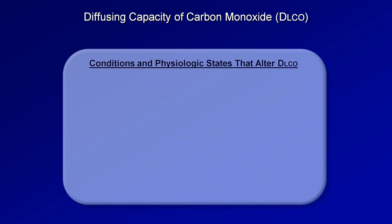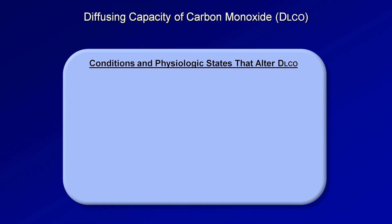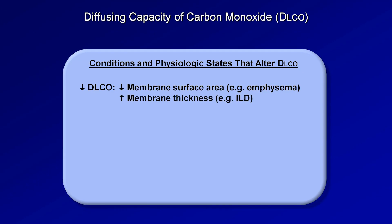There are many pathologic conditions and physiologic states that can alter the DLCO. Those that decrease it include anything that decreases surface area, such as emphysema, or anything that increases membrane thickness, such as interstitial lung disease. It also includes pulmonary hypertension of any cause, and anemia, since a decreased carrying capacity of carbon monoxide will necessarily result in a smaller partial pressure gradient driving the diffusion.